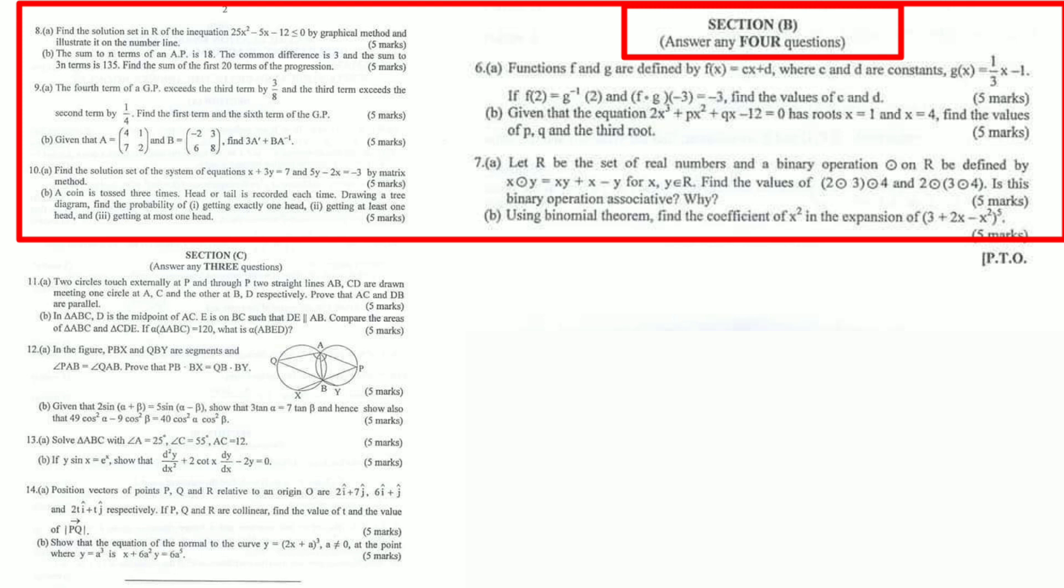Now for Section B, you need to answer the required questions. The system is different here - you'll be selecting from the available questions. Section B has specific chapters from seven onwards.